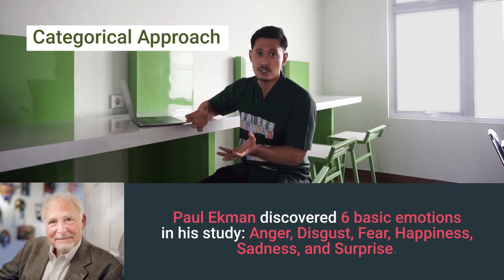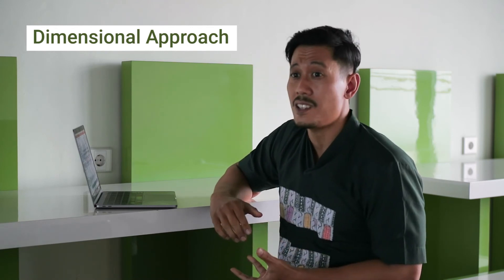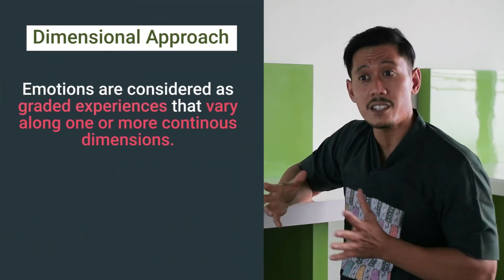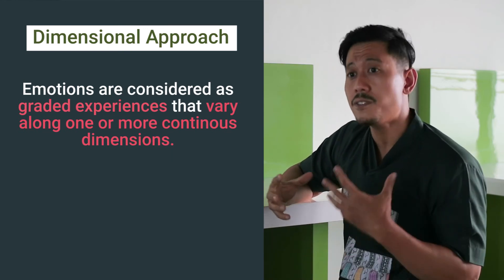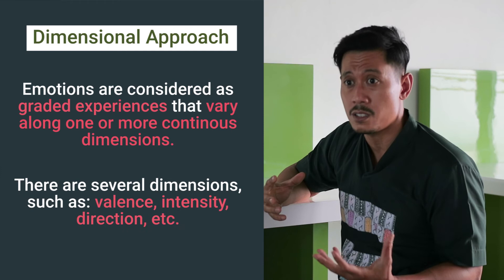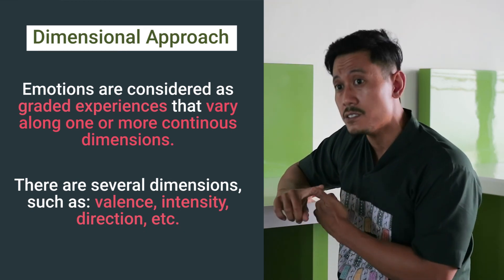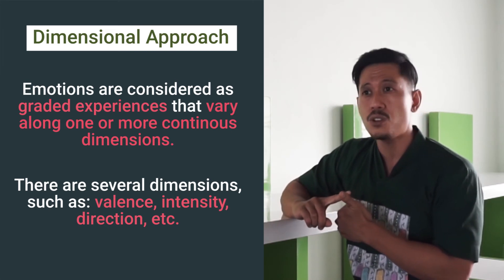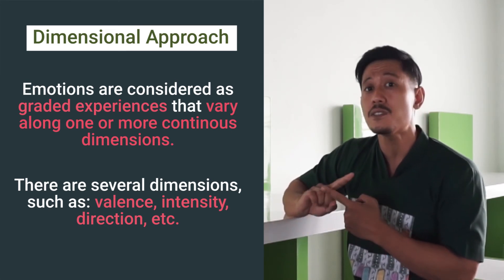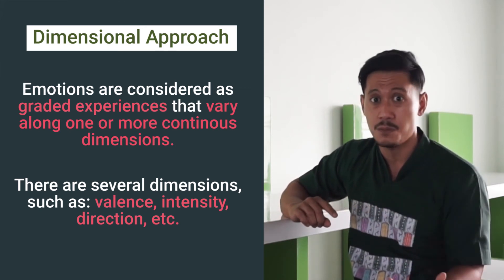From the dimensional approach, emotion is seen as a graded experience that varies along one continuum. We have many dimensions in emotion — for example, valence, where we have positive and negative emotions, and also direction, where we have approach and avoidance emotions.